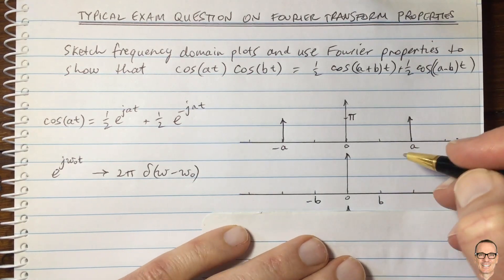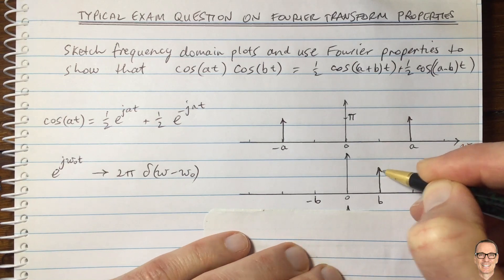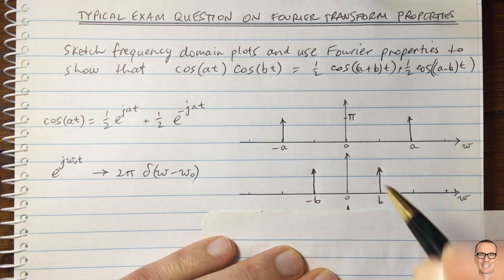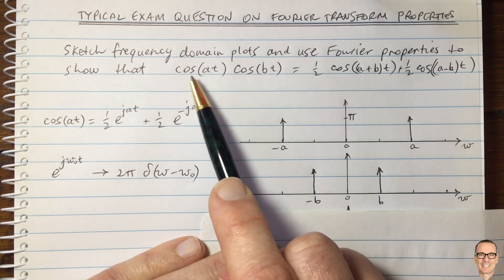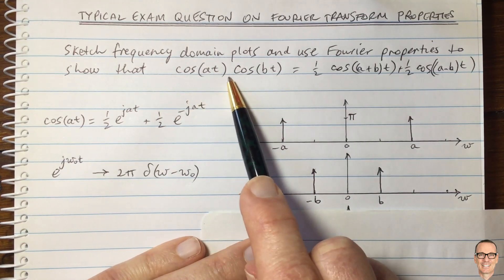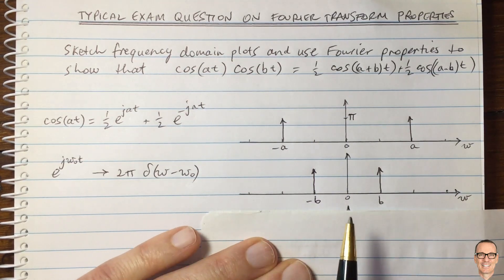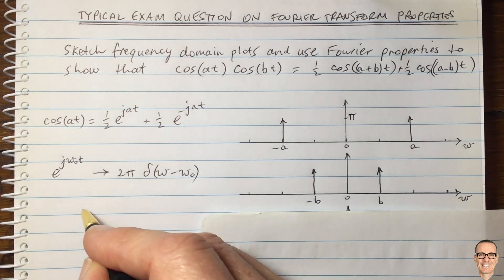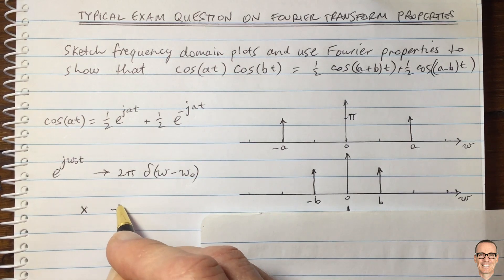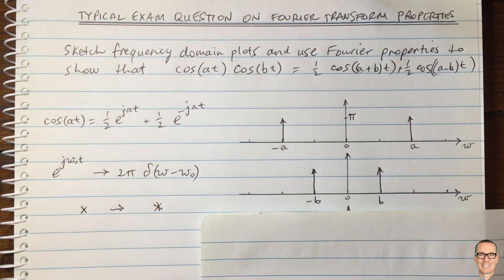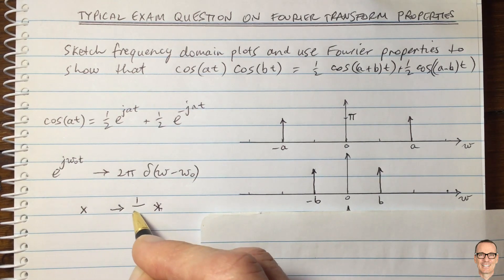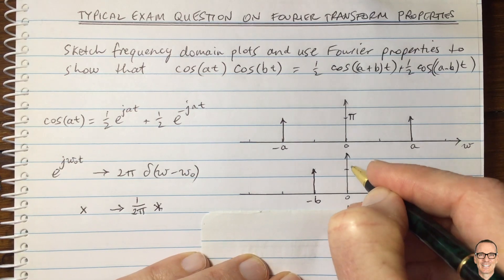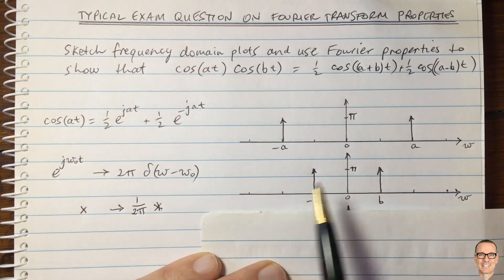Now let's do the Fourier transform of cos(bt) — it's the same form except the delta functions are at ±b. Now we use the property that multiplication in the time domain gives convolution in the frequency domain, but with a scaling of 1/(2π). The delta functions are each of height π, and now we perform the convolution.